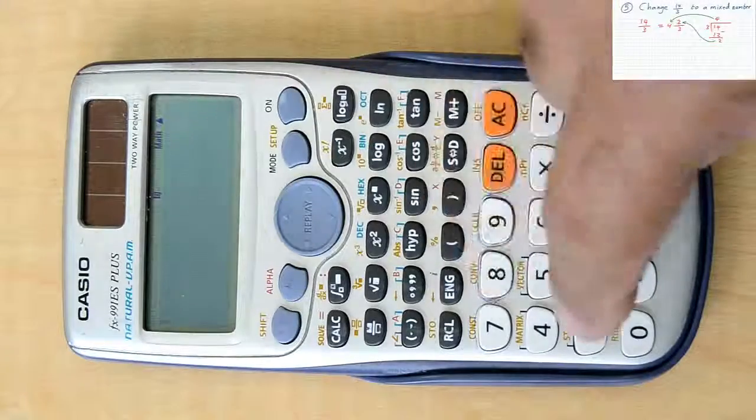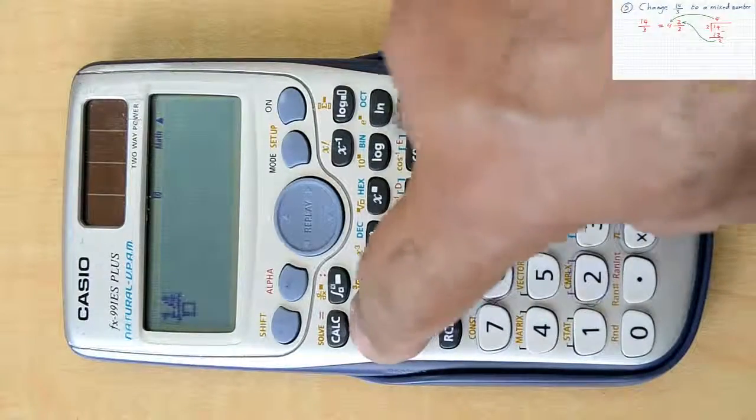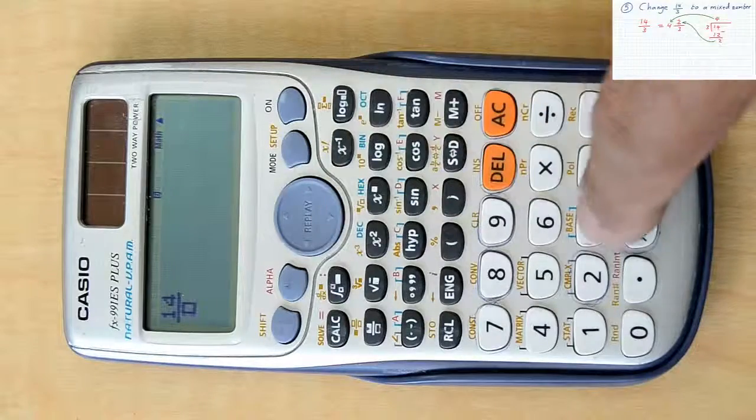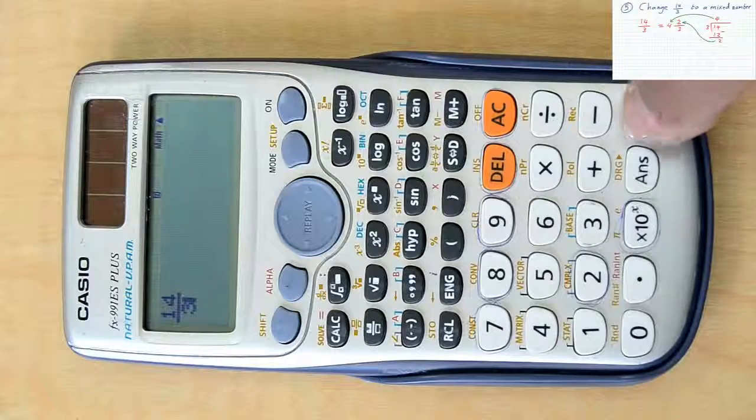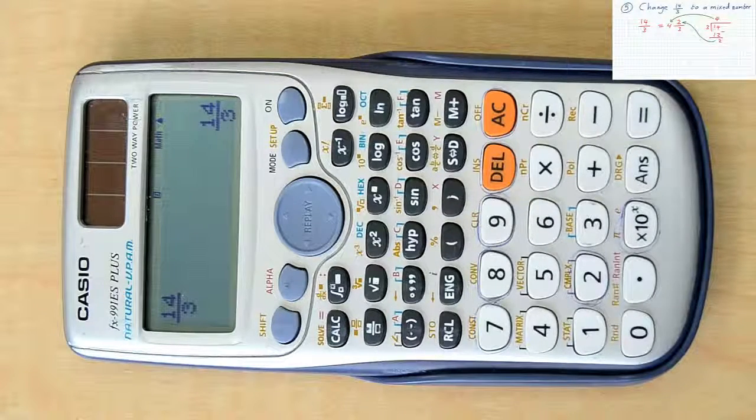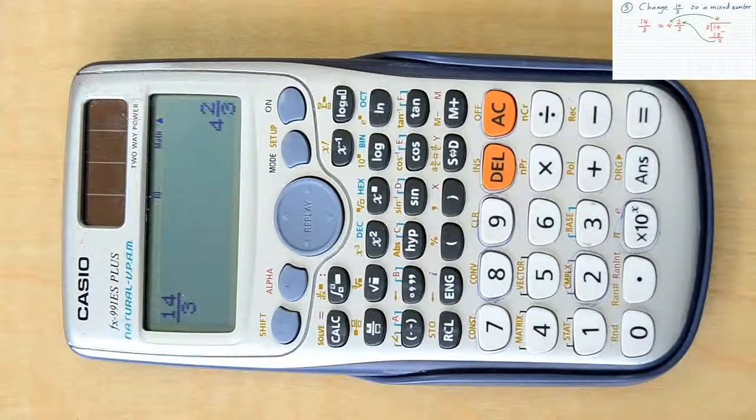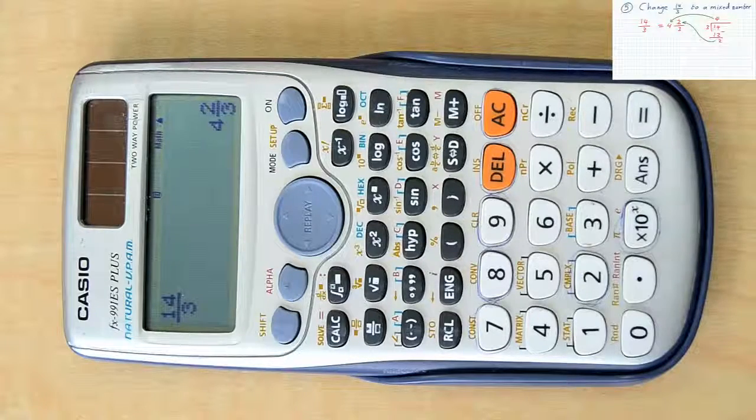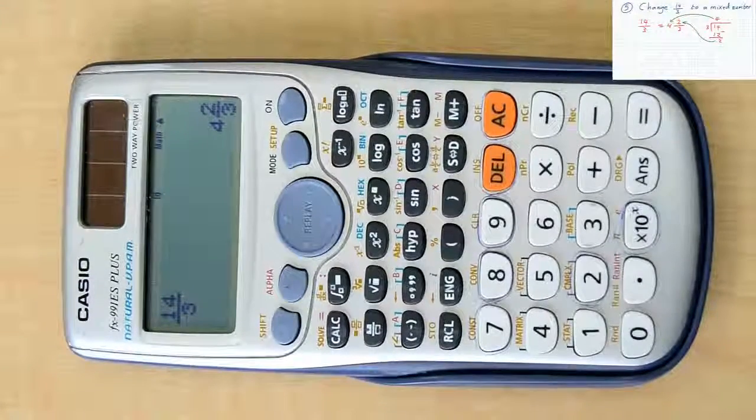Using the calculator, you just insert your fraction using the button of the fraction on the left, then press equal. The result is the same fraction, then use shift, then SD, and it will be given to you as 4 and 2 over 3, as we found it.